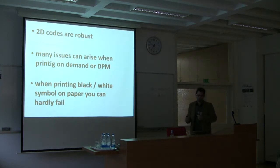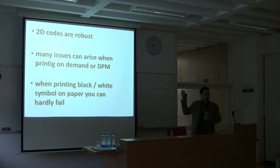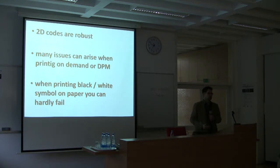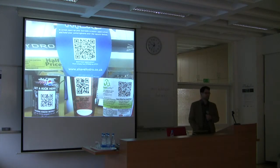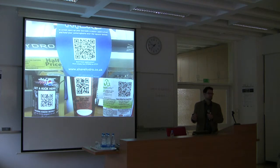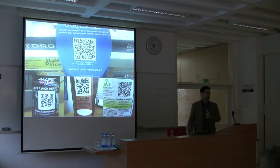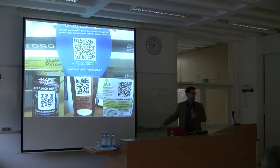Before going into some details on verification itself, please keep in mind that 2D codes are robust. Many issues arise when these codes are printed at very small size. But basically, when printing black and white on paper you will have no problem of any kind. These are examples used in marketing — the size is normally from a few centimeters up. One from a retail store, one from a PepsiCo bottle, one from Kentucky Fried Chicken, and one from Heinz ketchup — just to give an impression of how big these codes are.